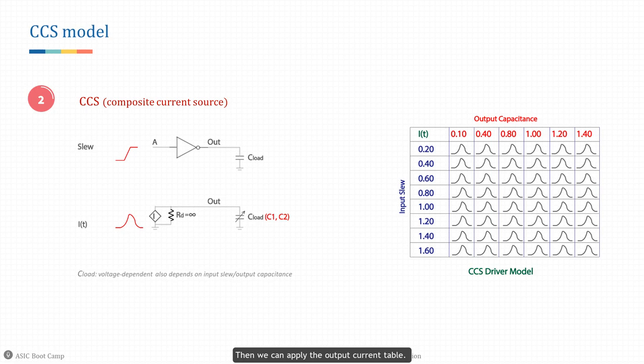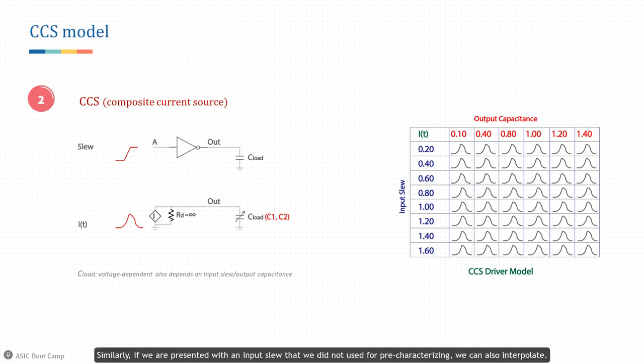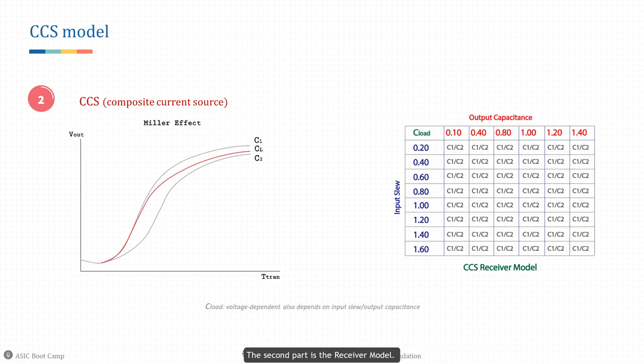When applying this driver model on an actual circuit, the first step is to calculate an effective capacitance from the reduced-order RC network, then apply the output current table. When these currents are applied to their respective capacitances, we can reconstruct the voltage waveforms. If presented with an output capacitance that was not pre-characterized, we can interpolate between the currents to predict the resulting waveform. Similarly, if presented with an input slew not used for pre-characterization, we can also interpolate.